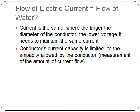in turn, is limited to the ampacity allowed by the conductor, which is a measurement of the amount of current flow. And of course, the higher the voltage, the higher the insulation level of the wire that is needed — which relates similarly to the thickness of your water pipe.